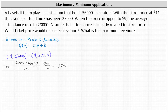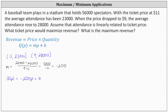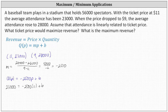So now we know Q of P is equal to negative 2,500P plus B. We still need to determine B, the vertical or y-intercept, by using one of the ordered pairs. Using the first ordered pair of (11, 23,000) and substituting 23,000 for Q of P and 11 for P, this gives us 23,000 equals negative 2,500 times 11 plus B, giving us 23,000 equals negative 27,500 plus B. Adding 27,500 to both sides, we have B equals 50,500.